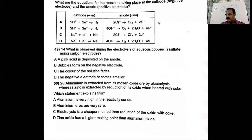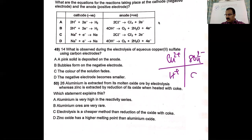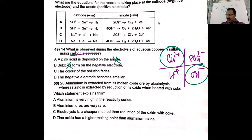What is observed during the electrolysis of aqueous copper sulfate using carbon (inert) electrodes? Copper is always deposited at the cathode. Option A: a pink solid is deposited at the anode — no, it's at the cathode. Option B: bubbles form at the negative electrode — not really, copper metal is deposited, not gas. Option C: the color of the solution fades — true, because copper ions are being removed. Option D: the negative electrode becomes smaller — actually, copper is being deposited so it grows. So the correct answer is C — the color of the solution fades.